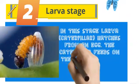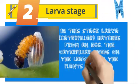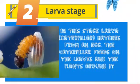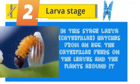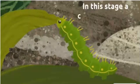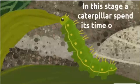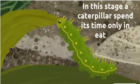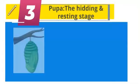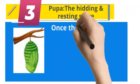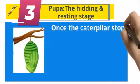The caterpillar feeds on the leaves and the plants around it. In this stage, a caterpillar spends its time only eating.